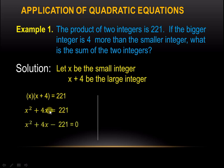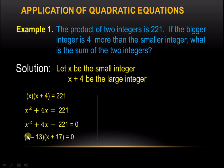We transfer 221 to the other side, so the equation becomes x squared plus 4x minus 221 equals 0. We're going to factor this — if you've already forgotten your factoring, please check out our other videos. The factors are (x minus 13)(x plus 17) equals 0.